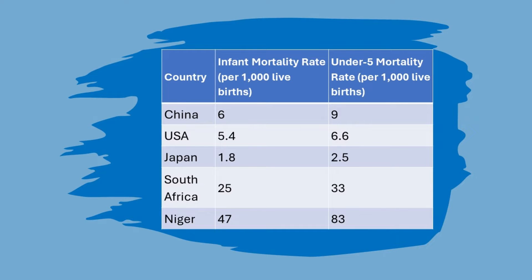This table shows infant mortality rates and under-five mortality rates for five countries: China, USA, Japan, South Africa, and Niger. China has an infant mortality rate of 6, the USA 5.4, Japan 1.8, South Africa 25, and Niger 47. The under-five mortality rate shows how many children out of 1,000 die before their fifth birthday: China 9, USA 6.6, Japan 2.5, South Africa 33, and Niger 83. Countries like Japan have very low rates, while countries like Niger have higher rates, indicating more children die young.